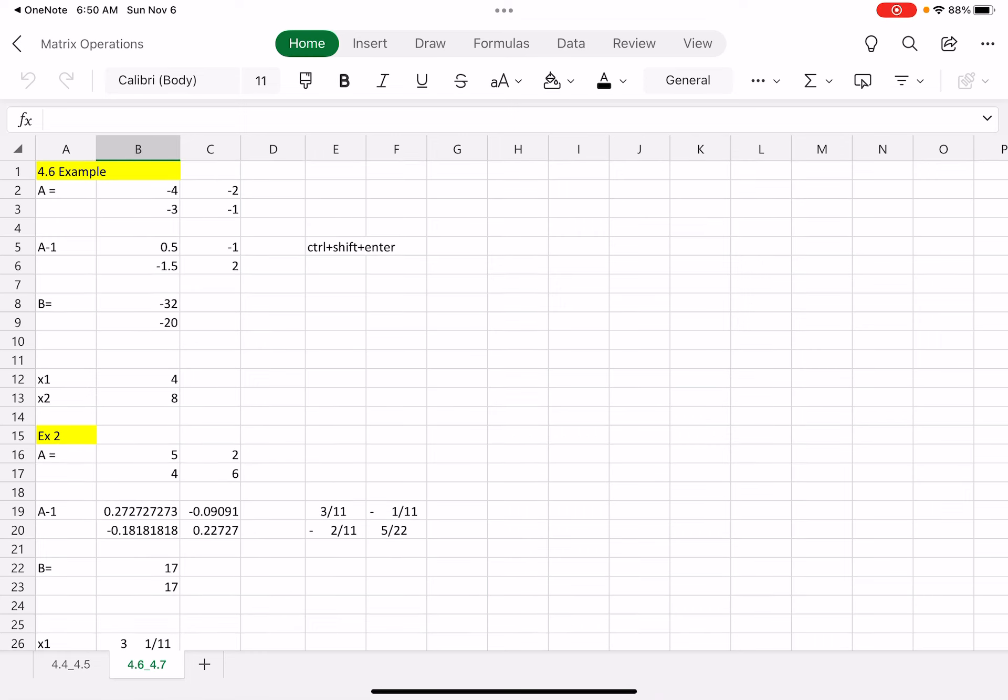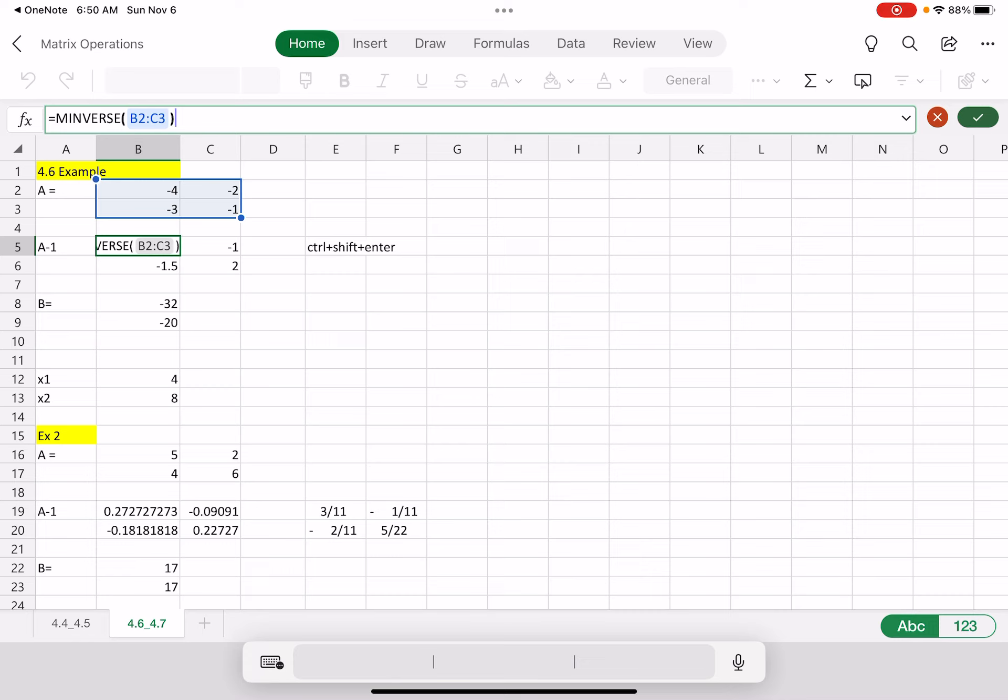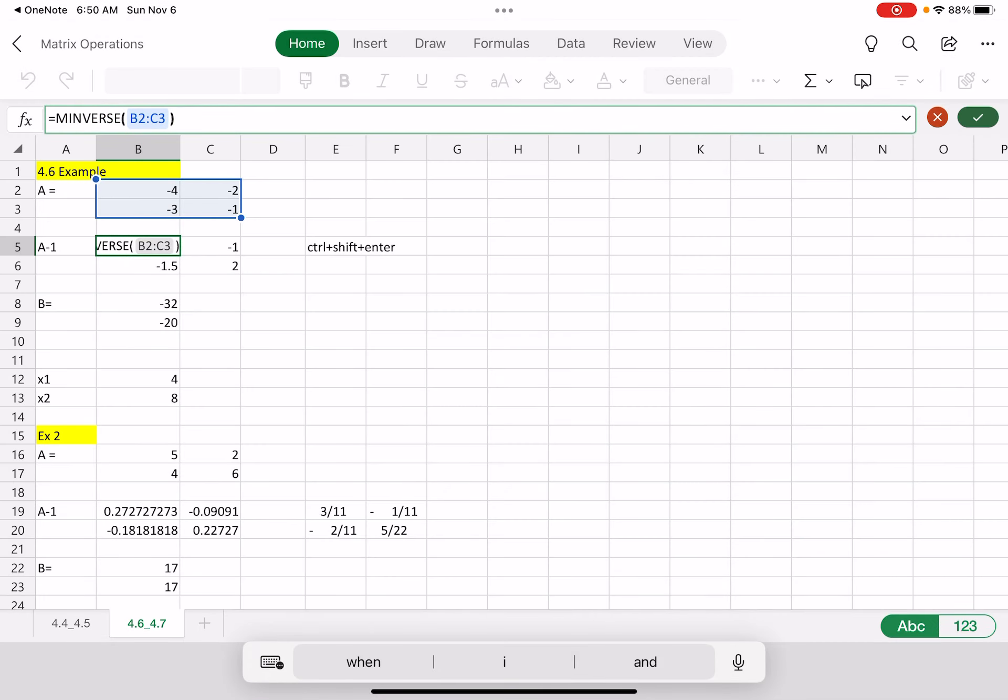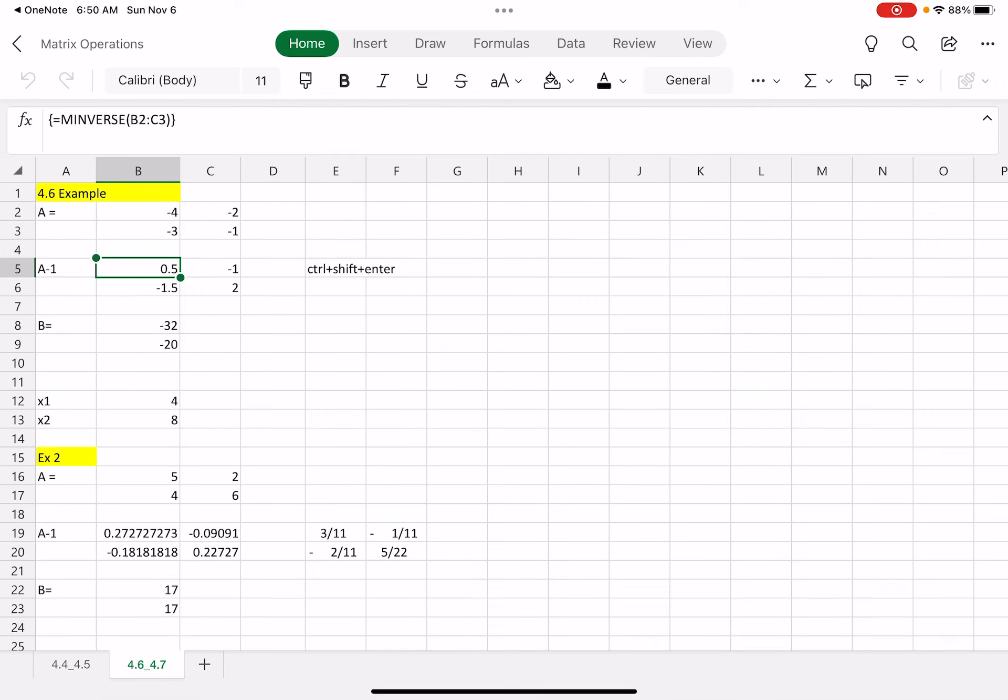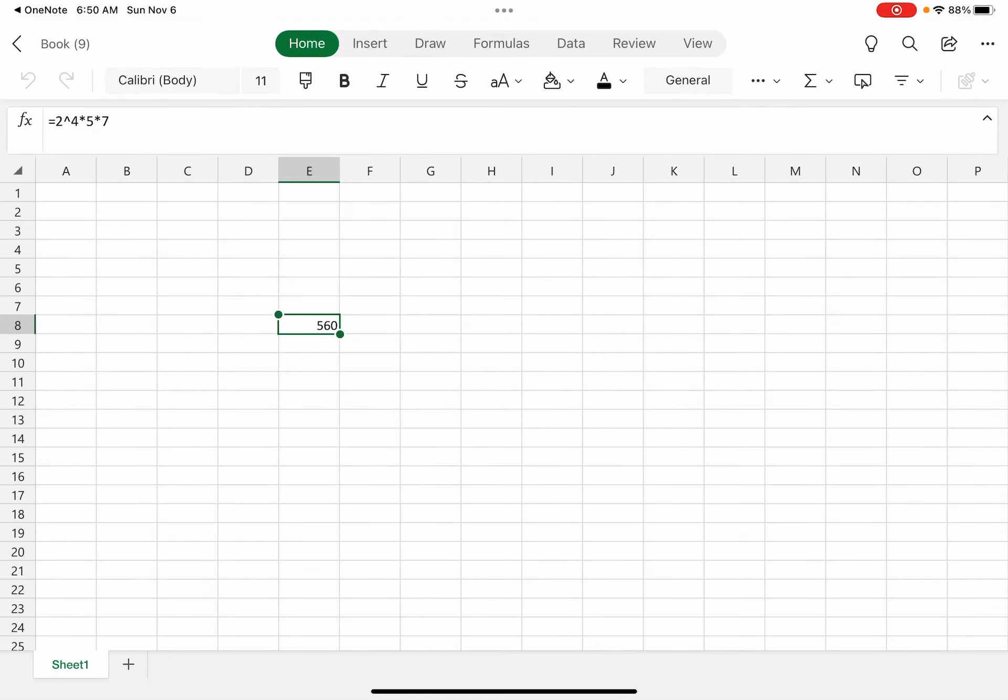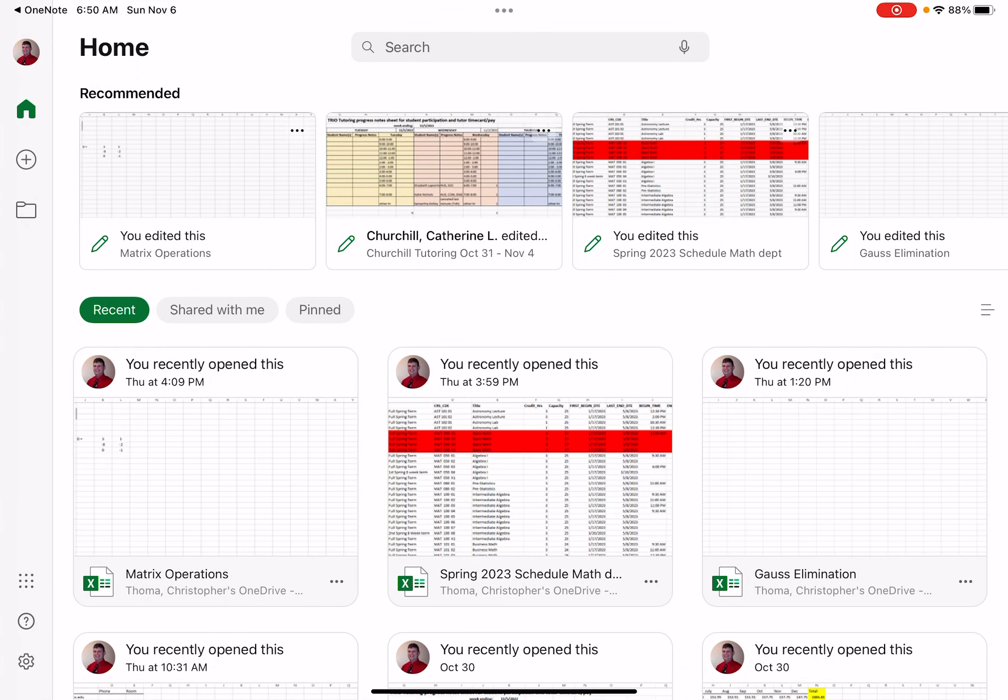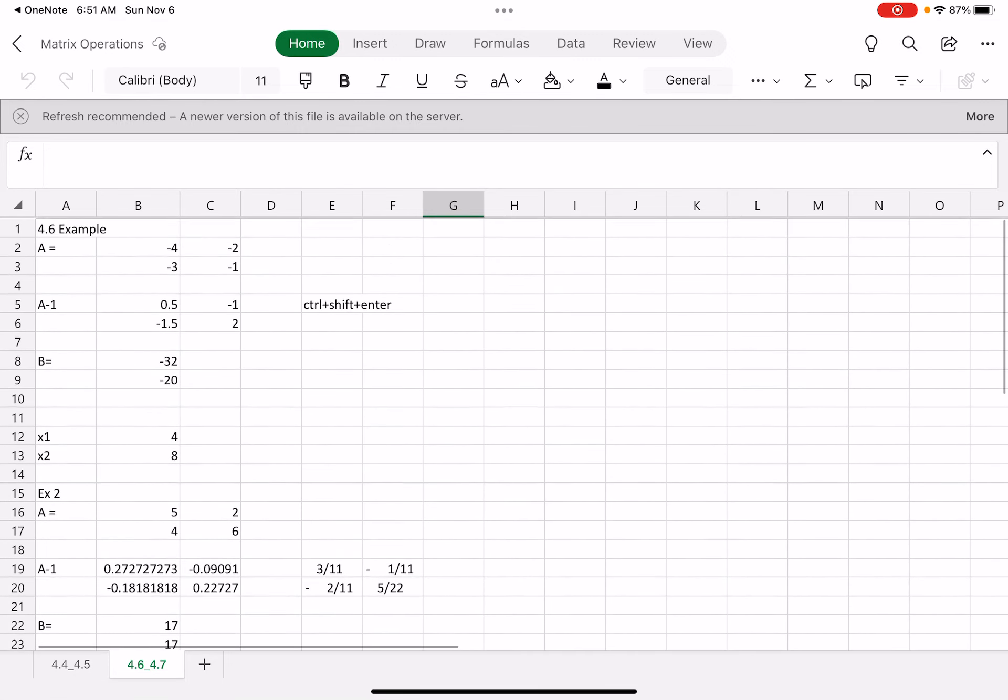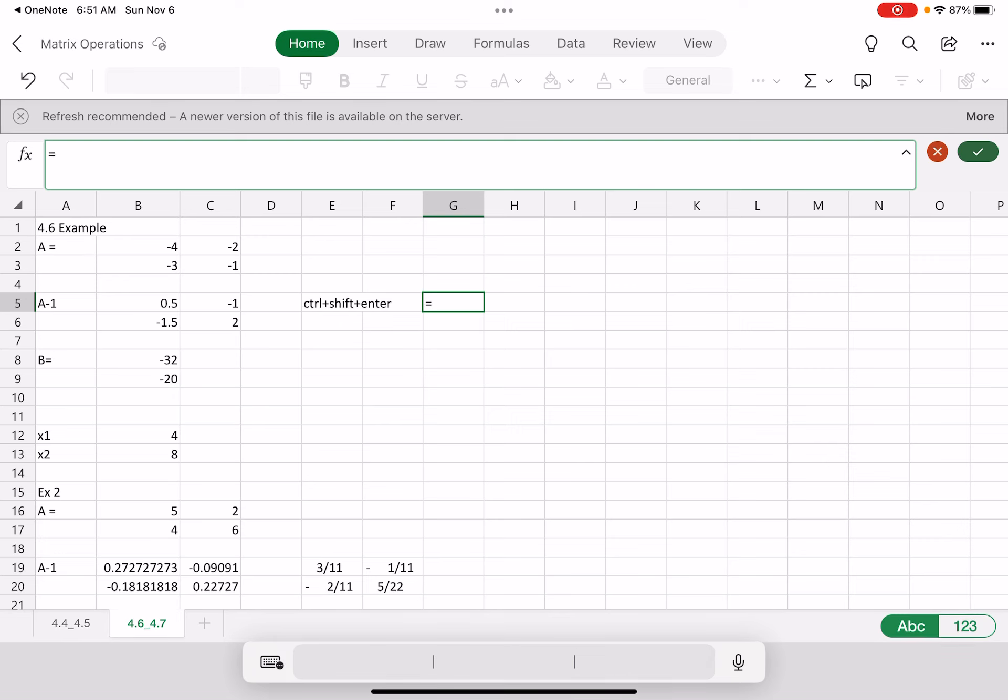Interestingly enough, if you hit Control-Shift-Enter, then that will create an identity matrix by using the commands Matrix Inverse. So what you do is you, let's see if I can do this without, because I'm on my iPad. So we'll see if this actually works. I'll just recreate it over here so I don't mess up my iPad. If I can get off this thing.